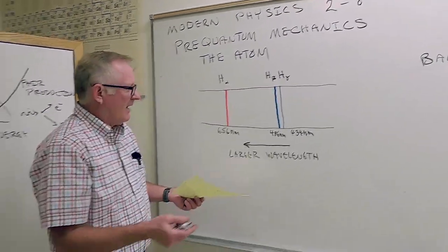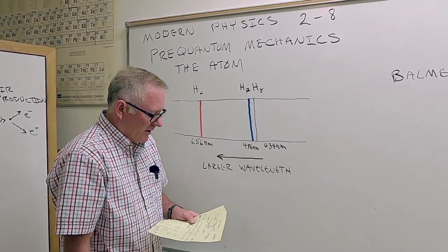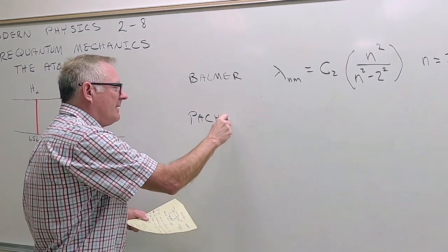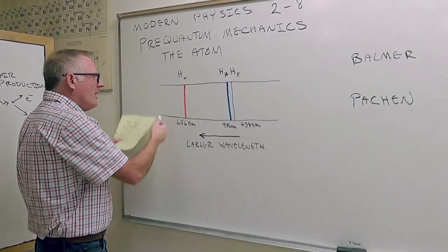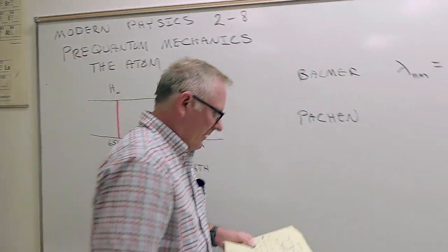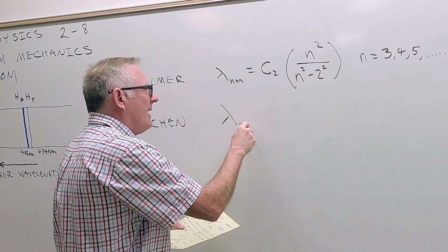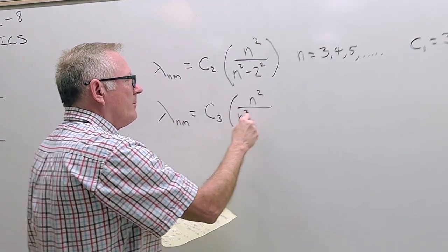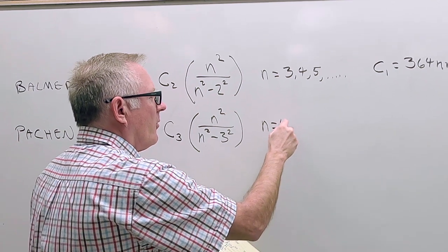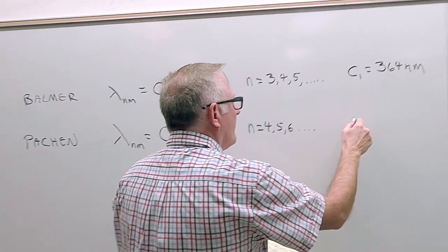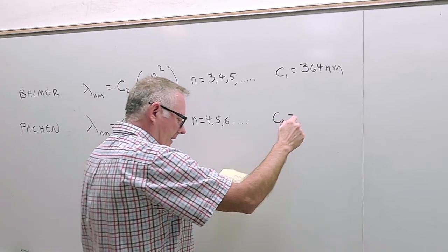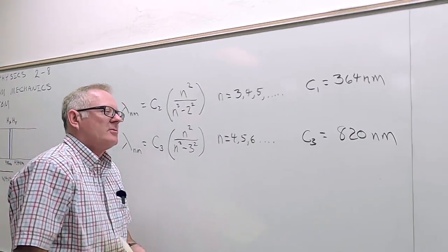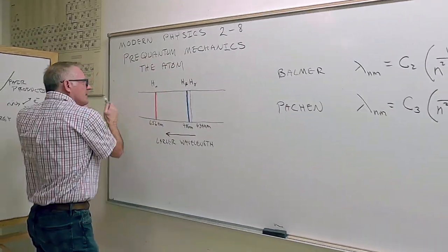Later, people saw other lines outside the visible spectrum. Someone by the name of Paschen saw another whole sequence of lines in hydrogen in the infrared. His formula is: wavelength in nanometers equals C3 times n² over (n² − 3²), where n starts at 4, 5, 6, and so on. C3 equals 820 nanometers — so these are much longer wavelengths, in the infrared.